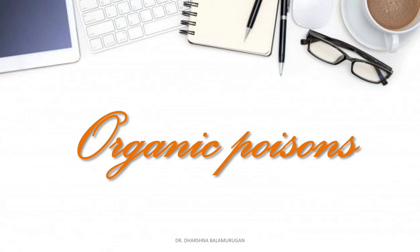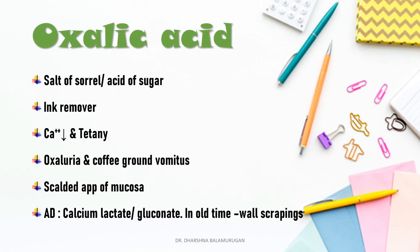Next, organic poisons. First, oxalic acid, also known as acid of sugar or salt of sorrel. It is called an ink remover because in olden days it was used as a bleach to remove stains, clean brass, copper, or leather articles, and to remove writing and signatures illegally. MCQ: which acid is used as an ink remover? Answer: oxalic acid. Important MCQ: oxalic acid poisoning causes hypocalcemia and tetany, because it readily combines with calcium ions in body tissues and causes their withdrawal.